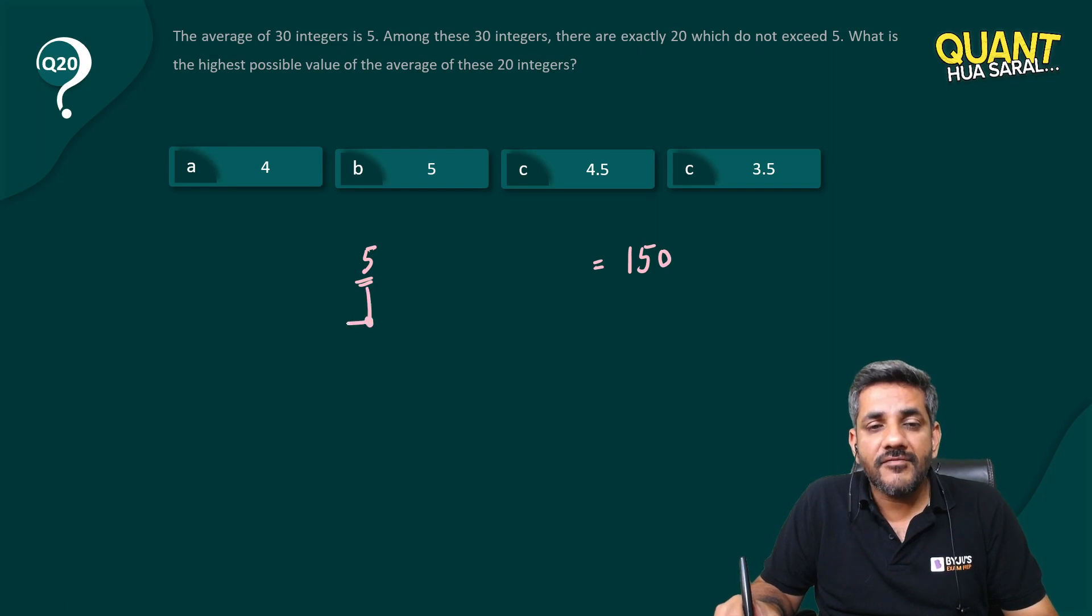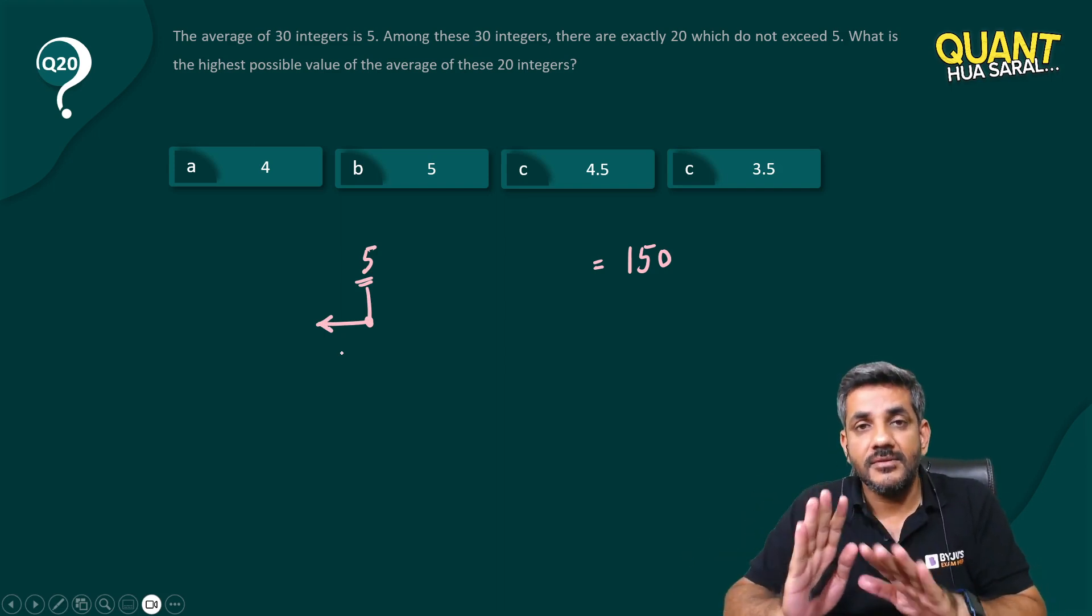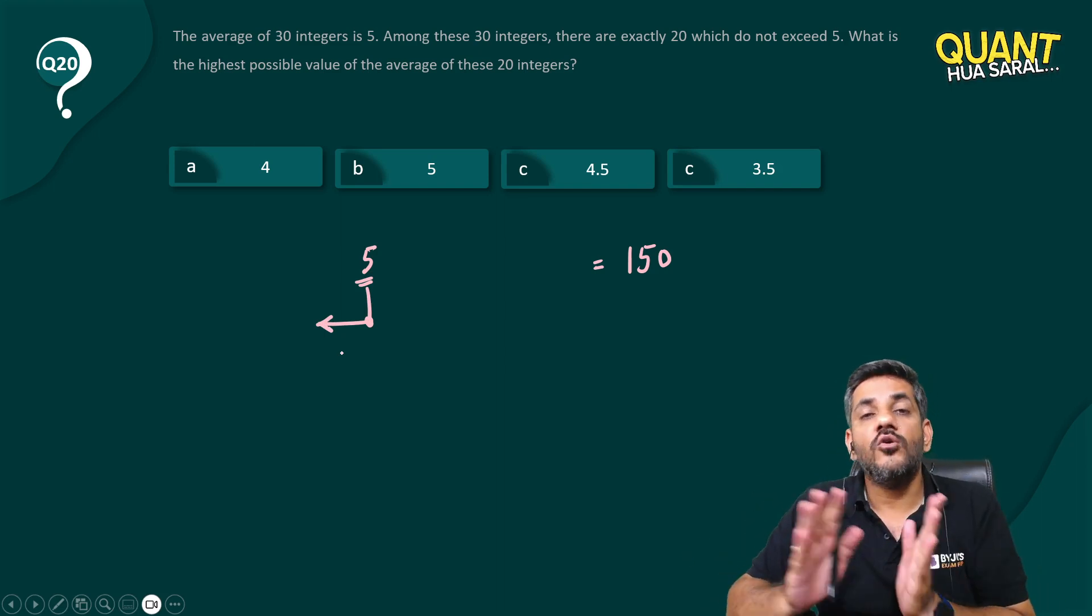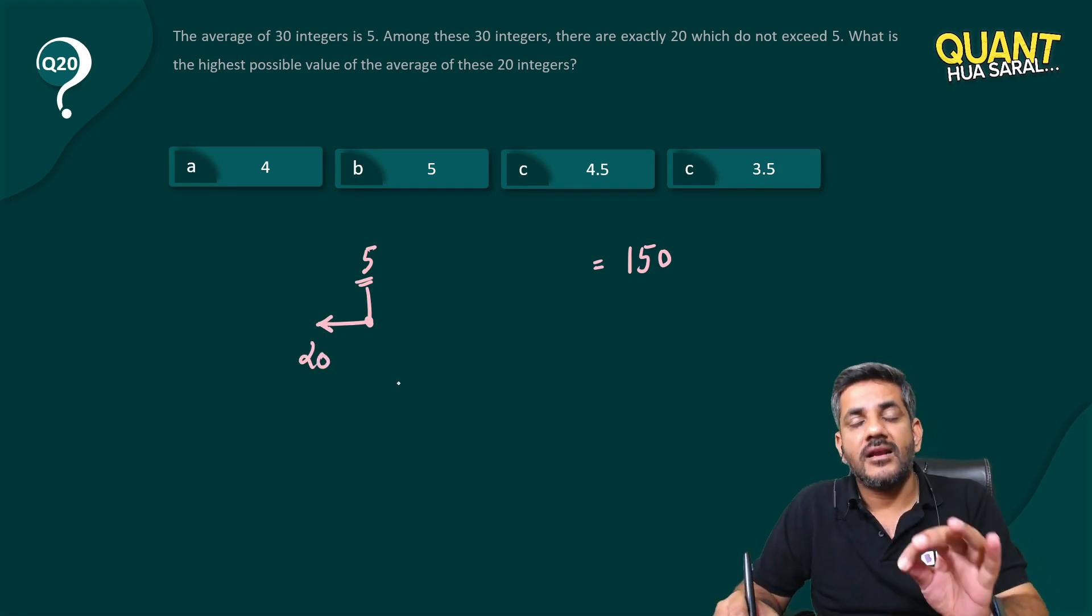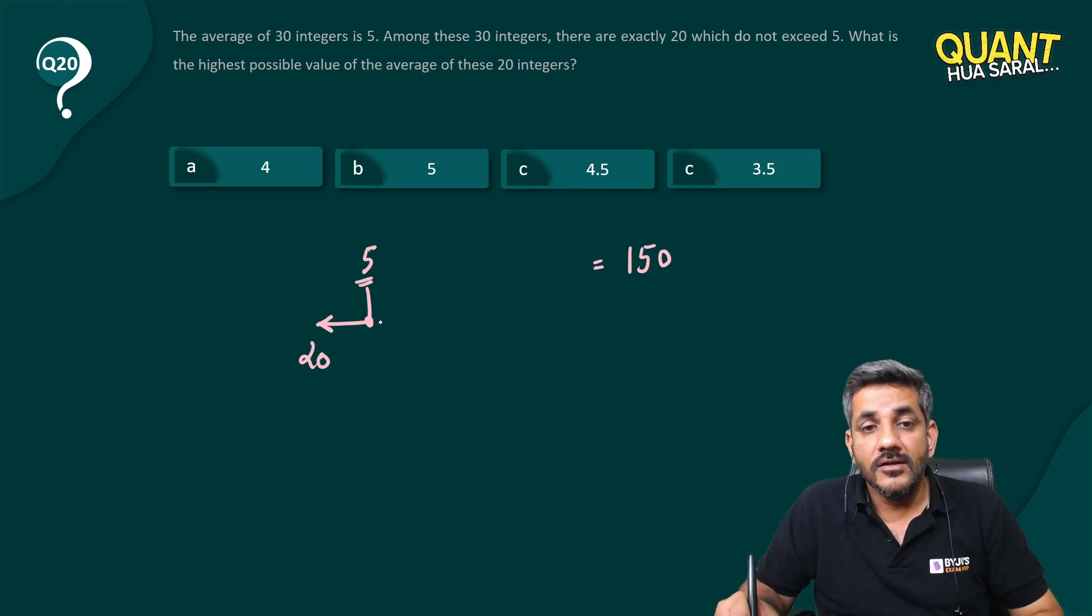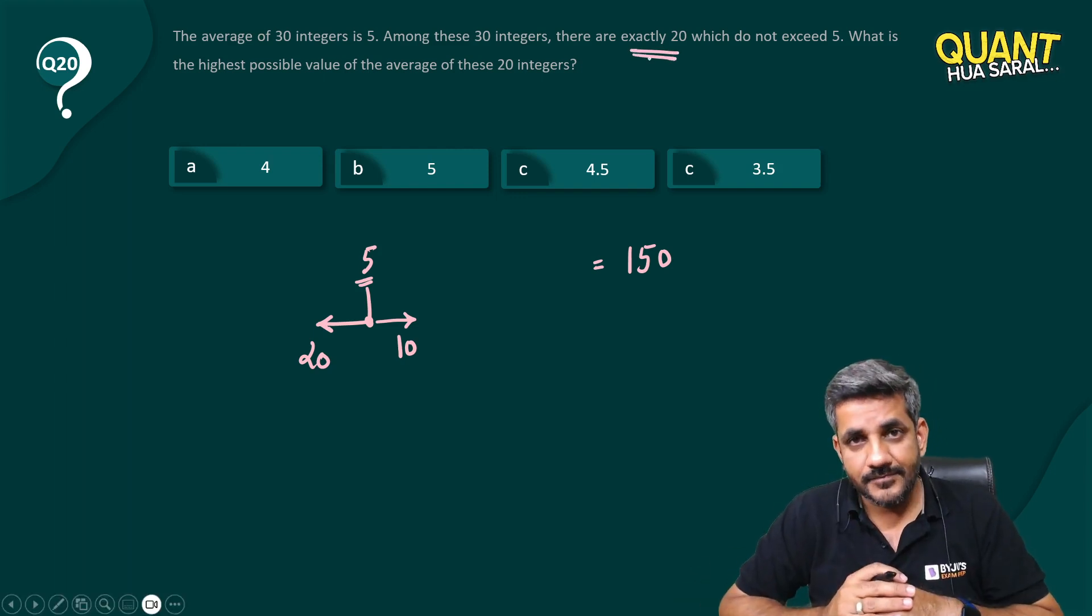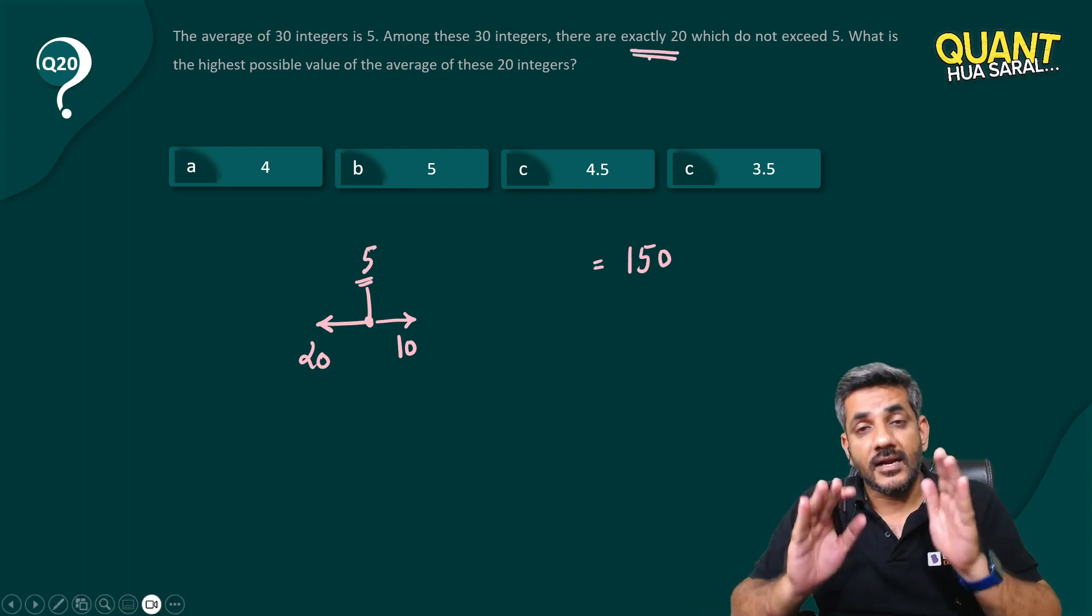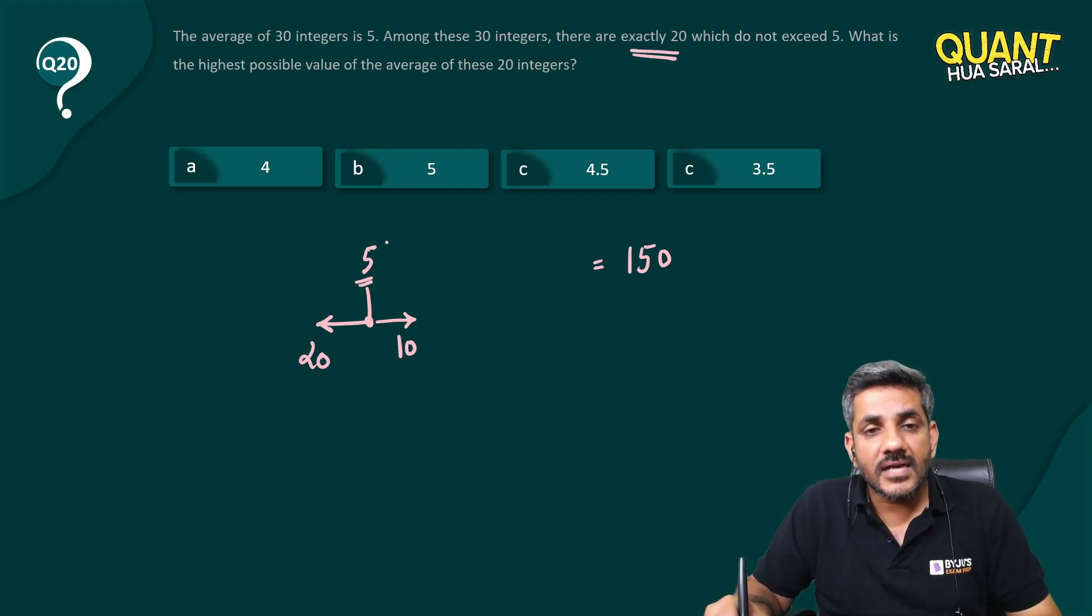20 of the numbers are either 5 or below 5. They are saying that these numbers do not exceed 5. That means they can be 5 but they can't go above 5. So 20 of the numbers are definitely not above 5. So can I say the remaining 10 must be above 5? Because he has written exactly 20 do not exceed 5, that means the remaining 10 now must exceed 5.